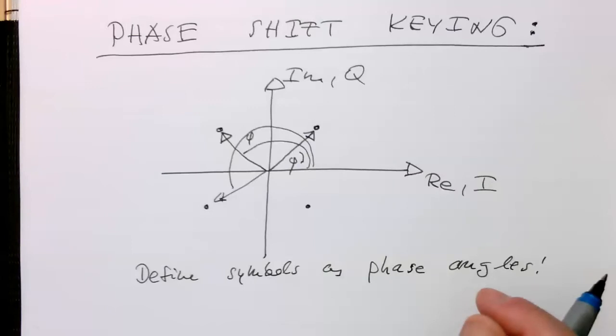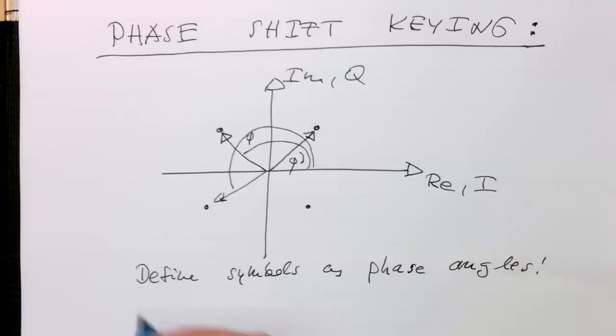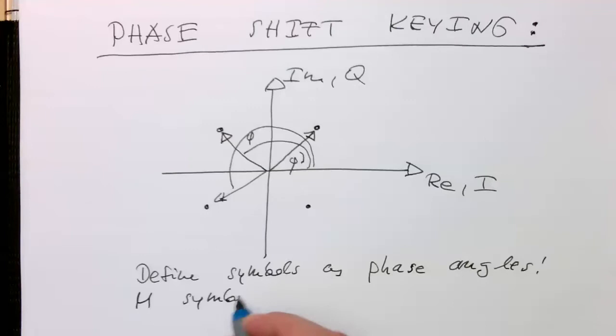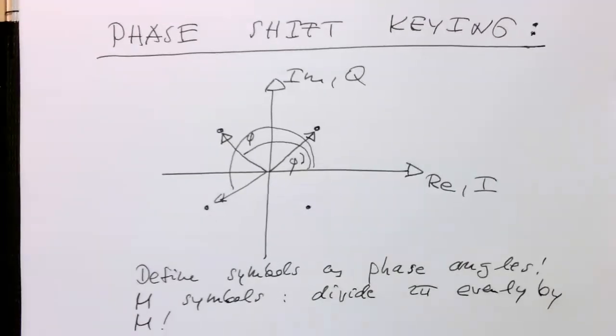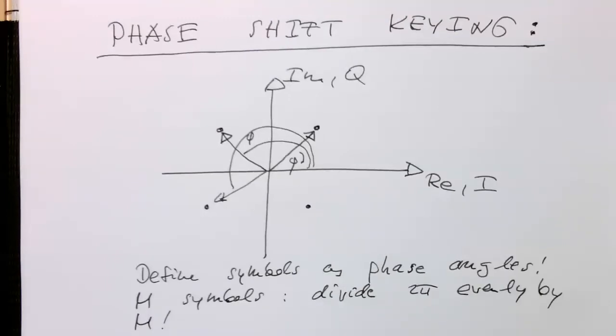That's obviously nothing surprising. If we would like to have m symbols, then we just divide 2π evenly by m. That's the only thing we need to do here.